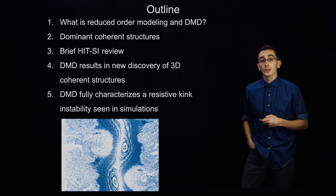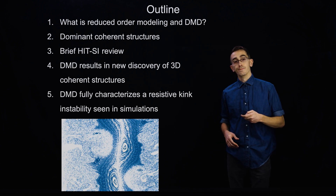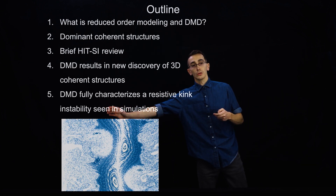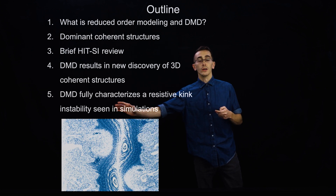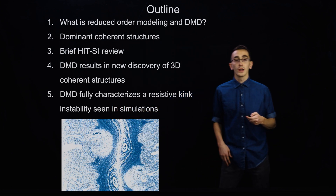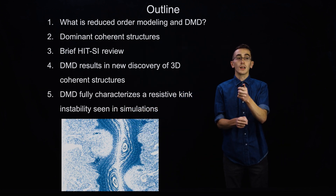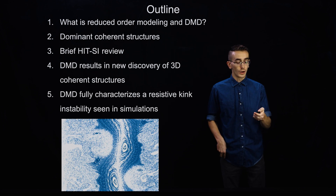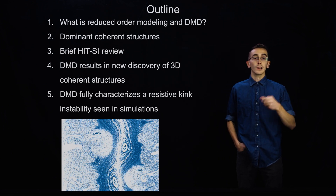Here we have a nice graphic showing a kink instability, where normally this would be a straight line of closed flux, but since it's kinking, both sides are kinking in either direction and breaking the closed flux.